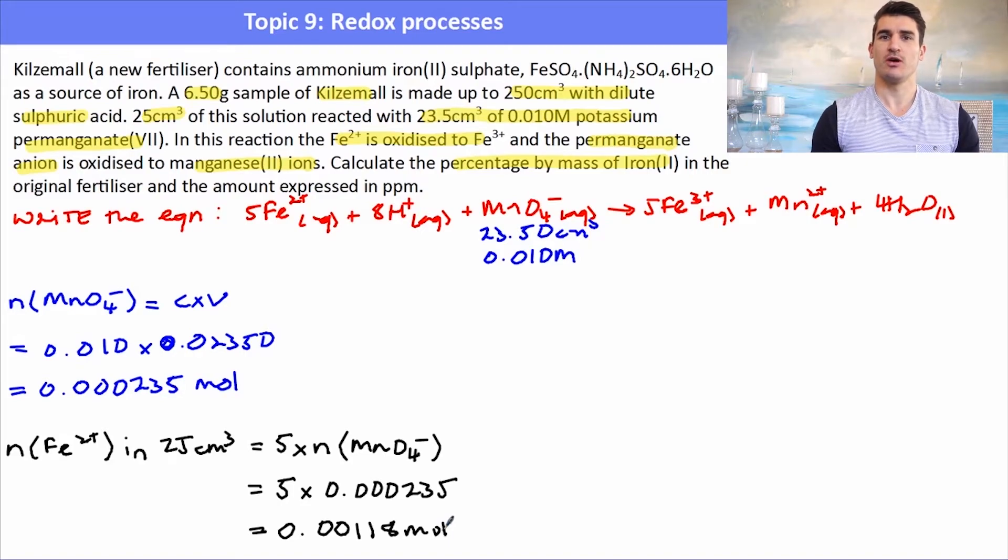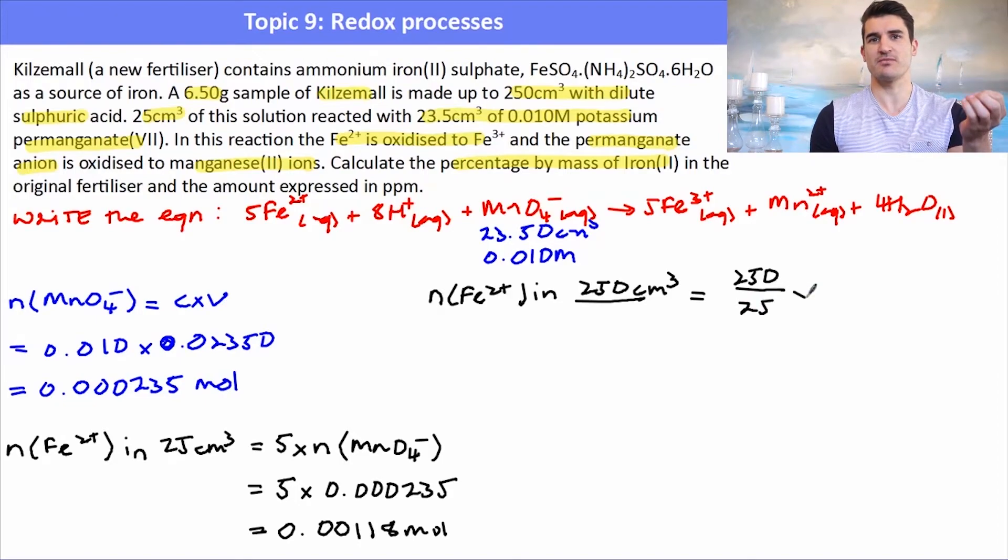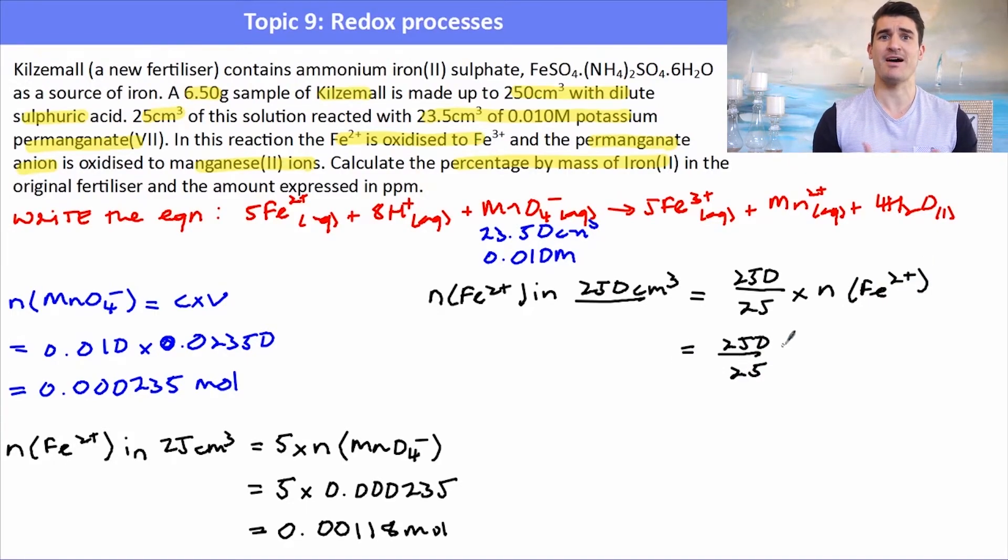But if we go back to the question, we actually had a sample that was 250 cm³, so a much bigger bottle. So what we need to do here is we need to scale this up. So think about this. How many times could I take 25 ml out of a 250 ml volumetric flask? Well, I could do that 10 times. So I do the size of my volumetric flask divided by the size of my aliquot times by the number of moles of the Fe³⁺. Think about scaling it up. How many more times could I do this analysis?